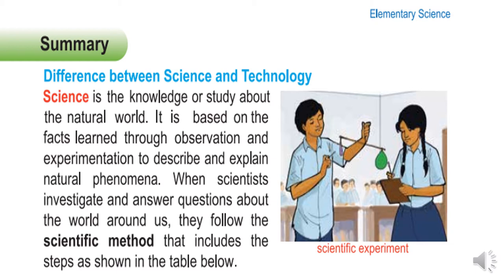Science is the knowledge or study about the natural world. It is based on facts learned through observation and experimentation to describe and explain natural phenomena. When scientists investigate and answer questions about the world around us, they follow the scientific method that includes the steps as shown in the table below.